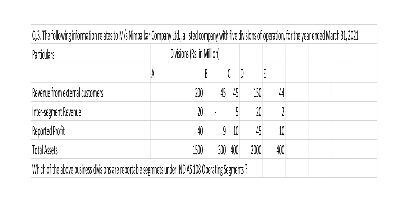The problem gives information related to Miss Nimbalkar Company Limited, a listed company with five divisions of operation for the year ended March 31st, 2021. The given particulars include revenue for external customers across divisions A, B, C, D, and E with values 245, 45, 150, 44, plus internal segment revenue for segments A, B, C, and reported profit and total assets. We have to find which of the above business divisions are reportable segments under Indian AS 108 operating segments.